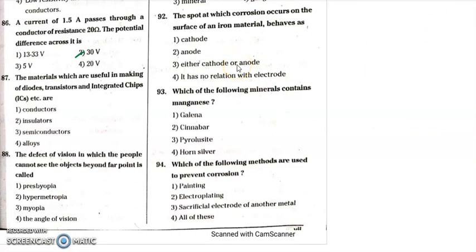Question 86: a current of 1.5 amperes flows through a resistance of 20 ohms. Voltage V = IR = 20 × 1.5 = 30 volts. So question 86, the second option is the correct answer. Question 87: materials useful in making diodes, transistors, and integrated circuits — these use semiconducting materials such as germanium and silicon. So question 87, the third option is the correct answer.